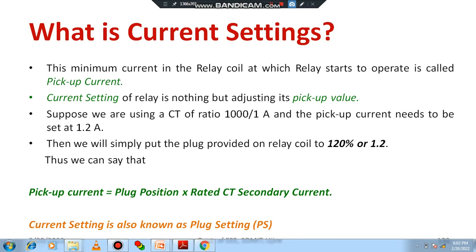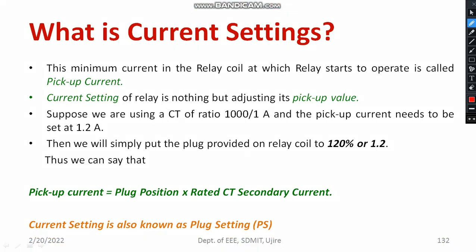So, what is current setting actually? The minimum current in the relay coil at which the relay starts operating is called pickup current, or you can call it the pickup value. After the pickup value or pickup current, the relay starts operating. Current setting of the relay is nothing but adjusting the pickup value — that is basically called current setting.